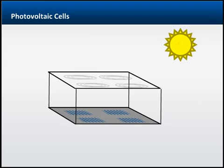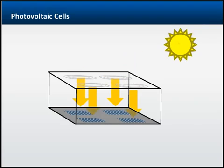The second type of module is designed to concentrate the sunlight to improve the output of the PV cells. These are called concentrator PV systems. A concentrator system includes a lens to focus the light, in addition to the cells and support mechanism.